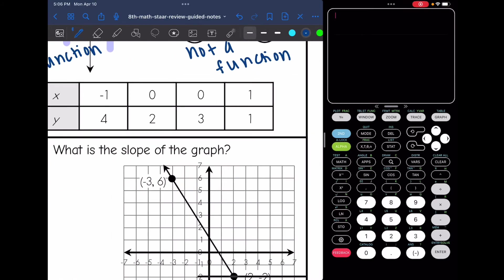And on my table, I can see that I have repeating x values. 0, 2, 0, 3 are the points. So this is not a function since I have those repeating x values.